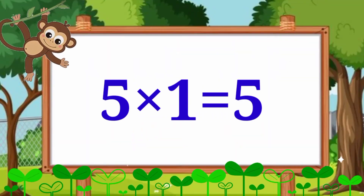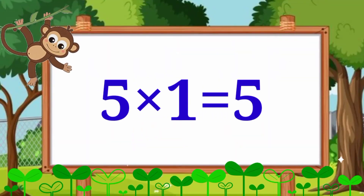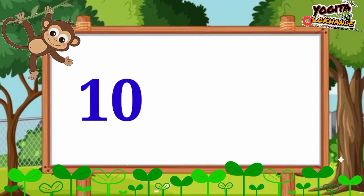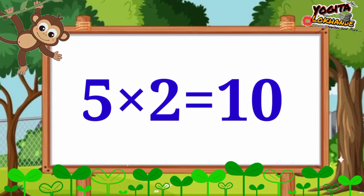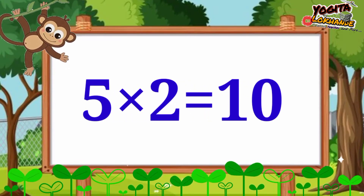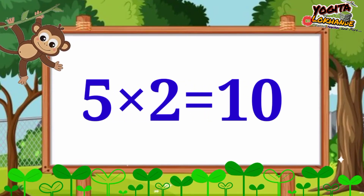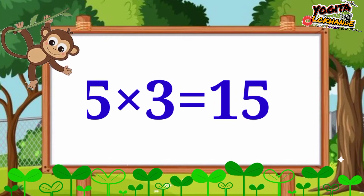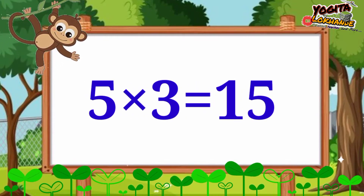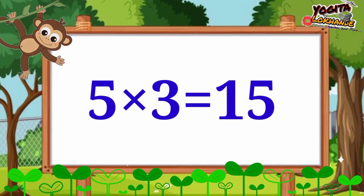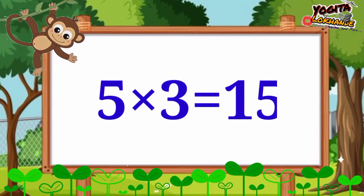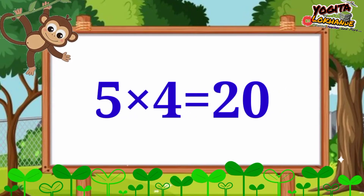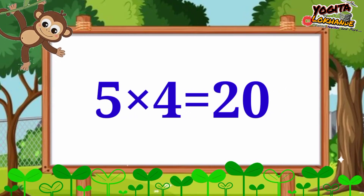Five ones are five. Five twos are ten. Five threes are fifteen. Five fours are twenty.